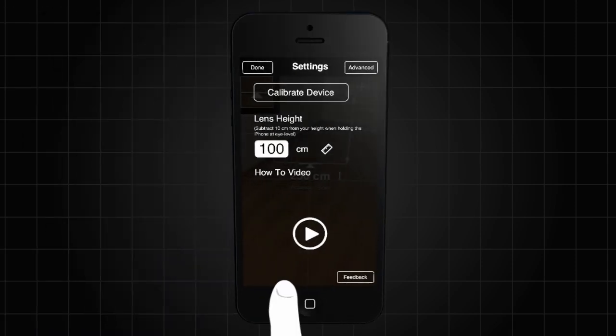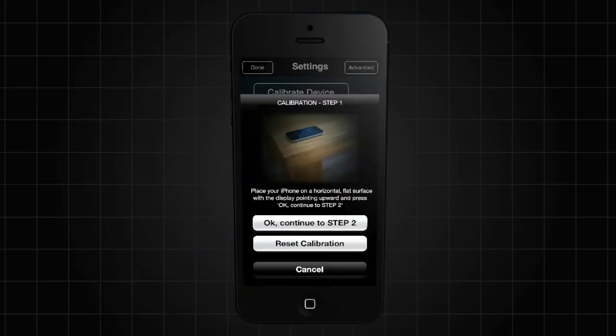Once you've done this, tap Calibrate and follow the on-screen instructions to fine-tune your phone for maximum precision. Now you're ready to take measurements.